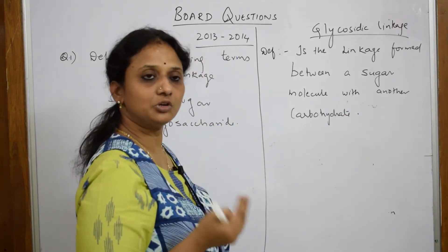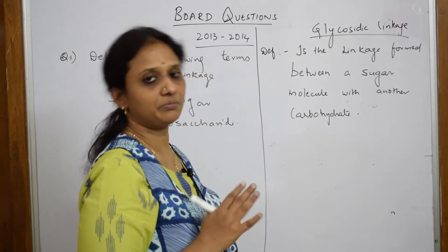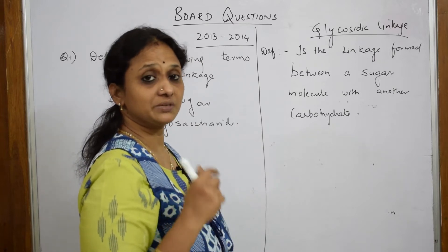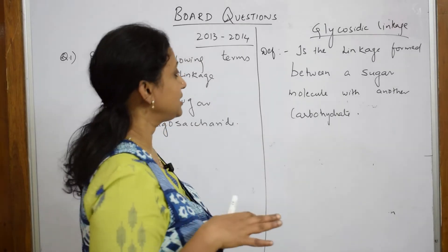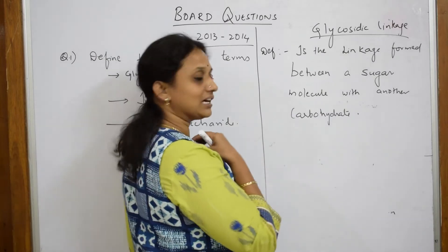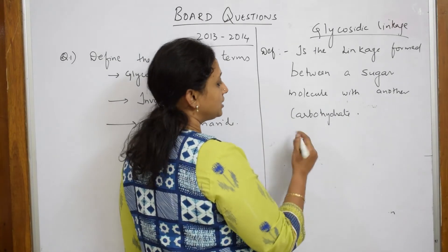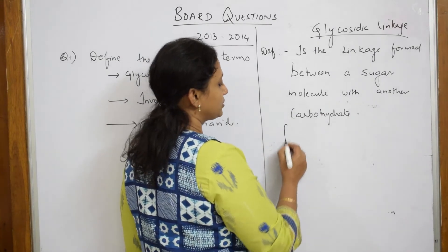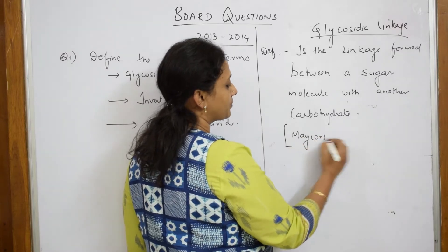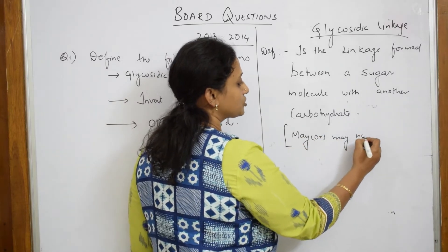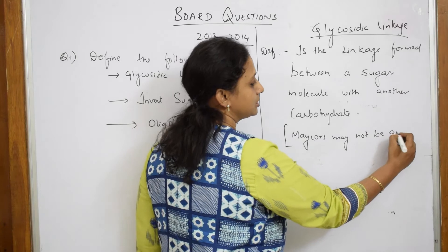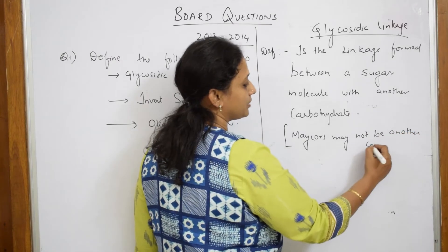The second molecule — the other molecule — may or may not be a carbohydrate. It can also be nitrogen atoms or sulfur atoms. So maybe write: sugar molecule with another carbohydrate, and you can just write 'may or may not be another carbohydrate.'